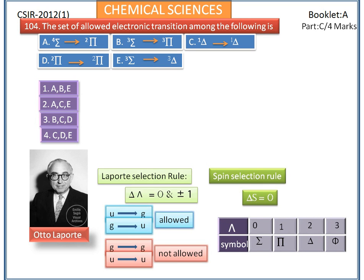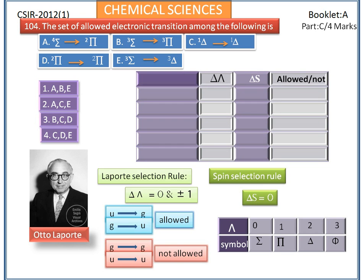To derive the allowed and forbidden electronic transitions, we need the lambda values and term symbols for each option. First, consider option A: quartet Σ to doublet Π. The lambda value for Σ is 0 and for Π is 1, so delta lambda = 1. However, delta S = −2, which does not obey the spin selection rule. So option A is a forbidden transition.